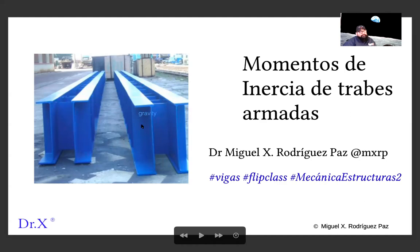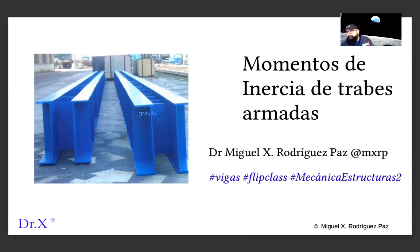Usually these beams are built in the workshop for specific applications, and sometimes we need to find the properties for them. You can draw this in a different application — there's one called 'Section Properties' available on Android; I haven't found one for iOS. You can also do it in any spreadsheet, and it's going to be a very simple procedure.